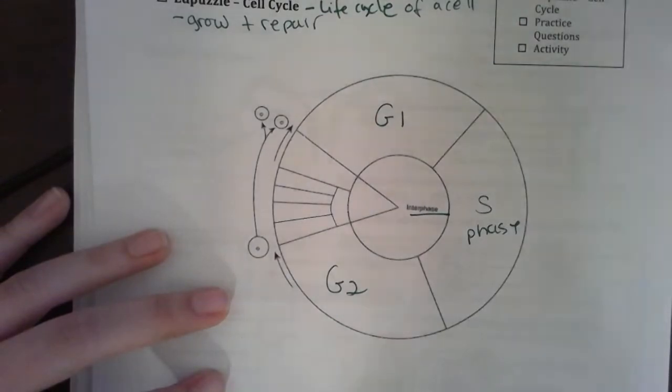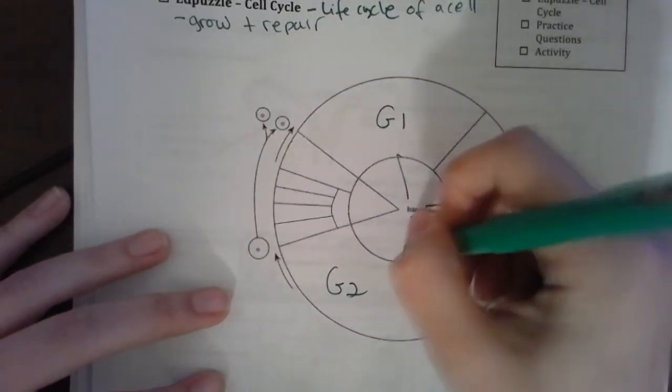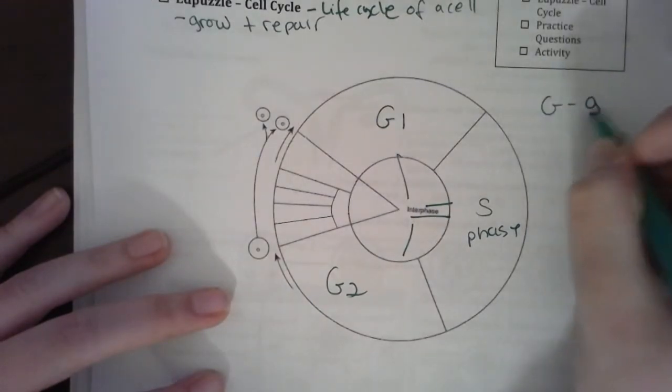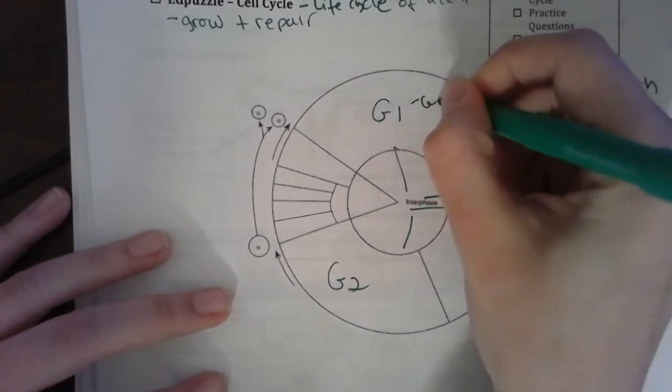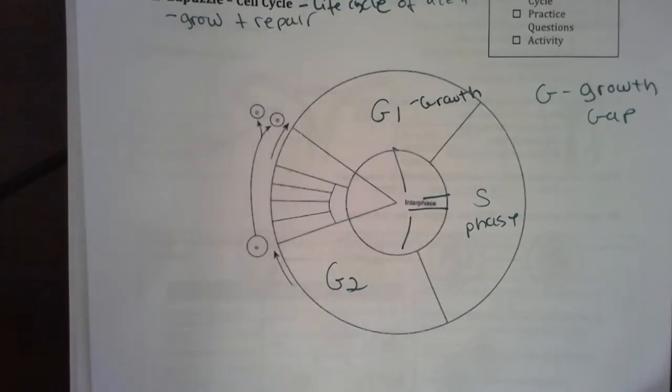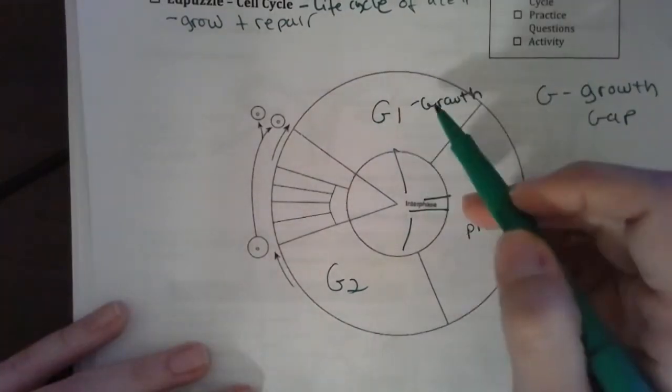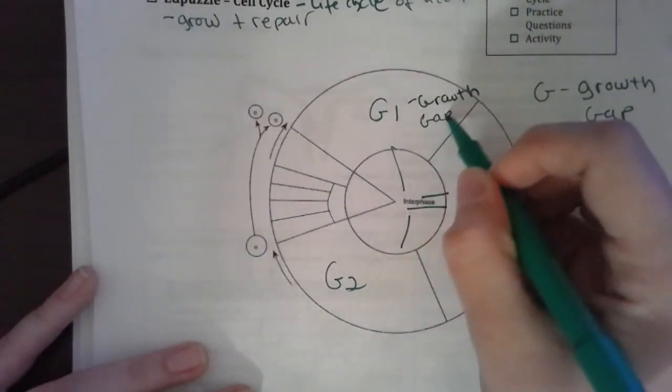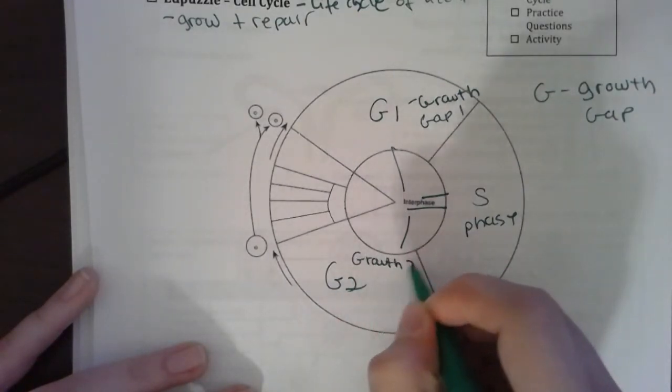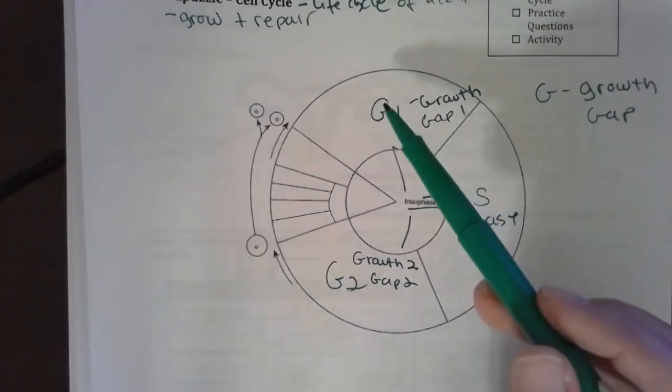Interphase is G1, S, G2. Fun fact: G stands for growth. In this case, G can also stand for gap - don't ask me why, that doesn't make as much sense. But G1 is growth 1 or the gap 1 phase. Growth 2 is growth 2 or gap 2 phase.